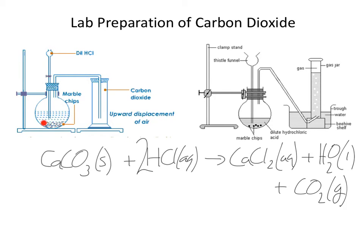You put the solid with the acid and you get bubbles of carbon dioxide which come up through the delivery tube in both these setups. Both setups are equally valid for preparing carbon dioxide. The first one makes use of carbon dioxide being a dense gas — denser than air — because as the carbon dioxide is bubbled into the gas jar, it pushes the air outwards since it sinks to the bottom. This method of collecting the gas is called the upward displacement of air.